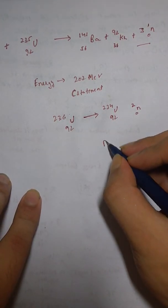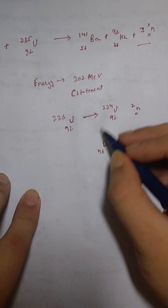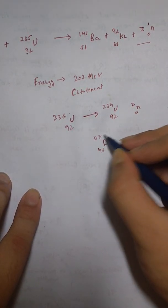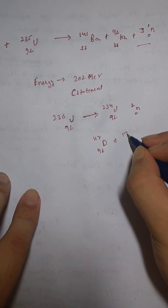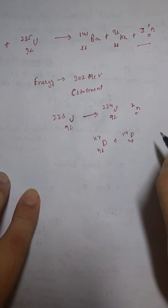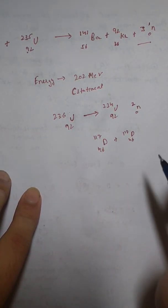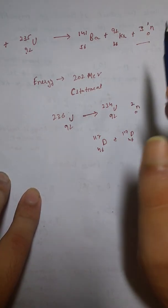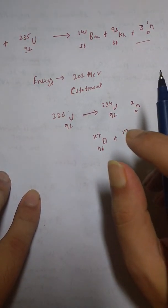That is symmetrical fission. But here if you see, we get one Ba-141 and the other is Kr-92, so this is unsymmetrical fission.